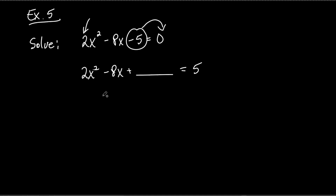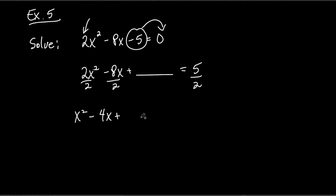Now let's get rid of the two. We divide both sides by two — divide everything by two, divide that by two, and divide the five by two. Unfortunately it doesn't come out to a nice whole number; we have to deal with a fraction — that's life. So what do we get? We get x² minus 4x plus a blank equals five over two. Don't change it to 2.5; keep it as five over two. It's a lot easier to do the math that way.